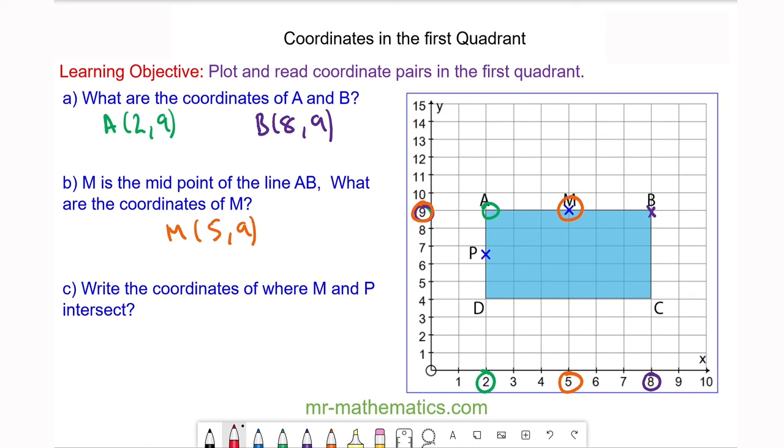And finally, the coordinates of where M and P intersect at this point here. x is equal to 5, and y is halfway between 6 and 7, so 6.5.